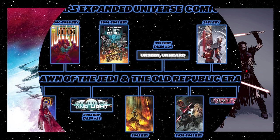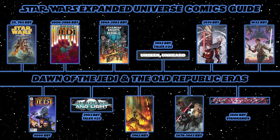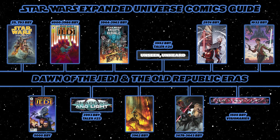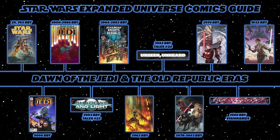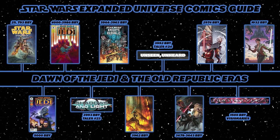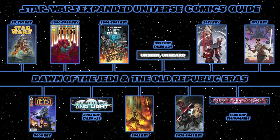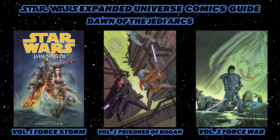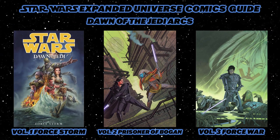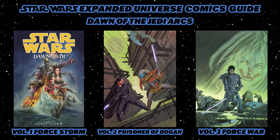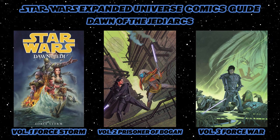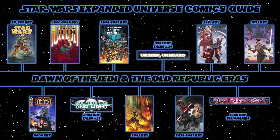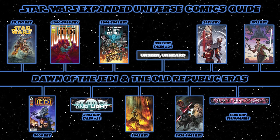The Star Wars Legends comic book timeline begins with Dawn of the Jedi, which takes place around 25,793 years before the Battle of Yavin, containing three main story arcs over 16 issues. There was a zero issue, then five issues for Force Storm, followed by The Prisoner of Bogan, and finally Force War. We then jump over 25,000 years into the future for the Old Republic timeline.